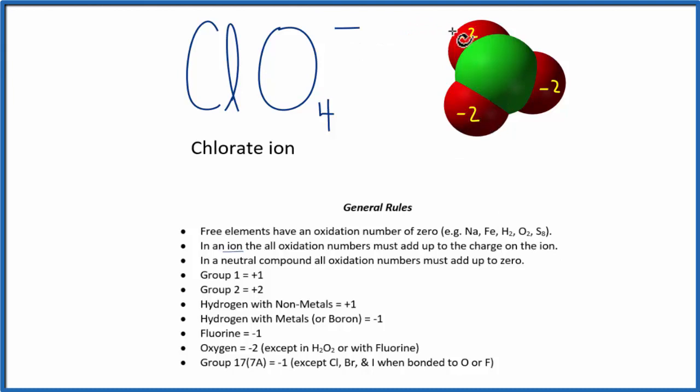We have 2, 4, 6, minus 6, plus some number that's going to equal the charge on the ion, on the chlorate ion, and that's minus 1. Plus 6 plus 5, that would give us a minus 1. So the oxidation number on the chlorine here is plus 5.